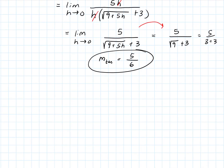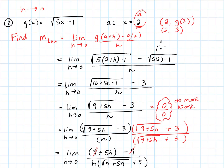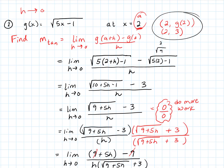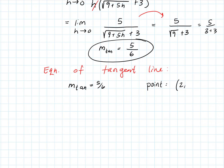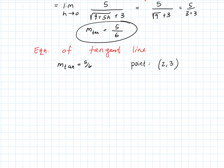We wanted not just the slope but the equation of the tangent line. We know the slope is 5/6. The point we're looking for is at x equals 2, and we found that g of 2 equals 3, so the point is 2, 3. To find the equation of the tangent line, using point-slope form: y minus 3 equals 5/6 times (x minus 2). Distributing: y minus 3 equals 5/6x minus 5/3. Adding 3 gives y equals 5/6x plus 4/3.